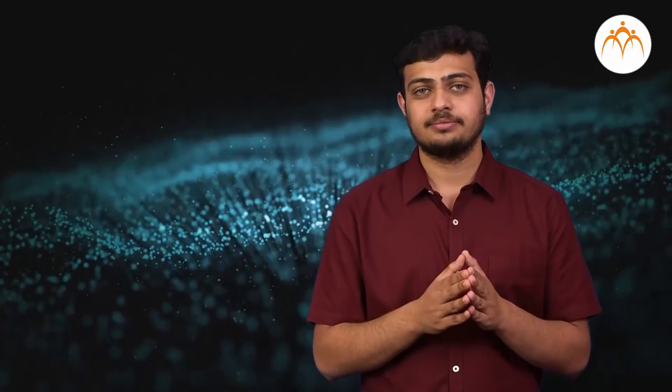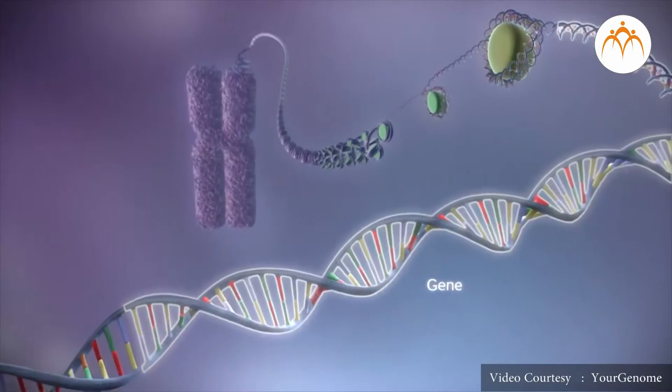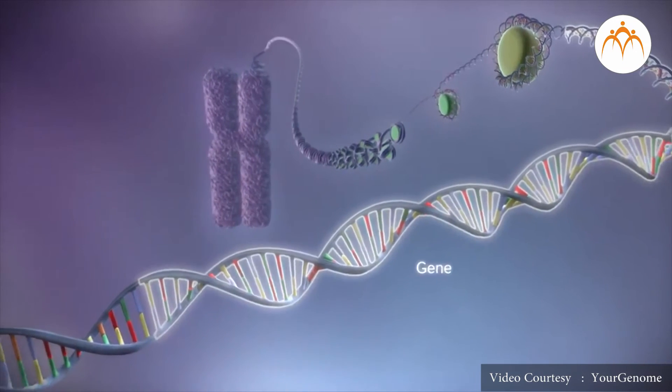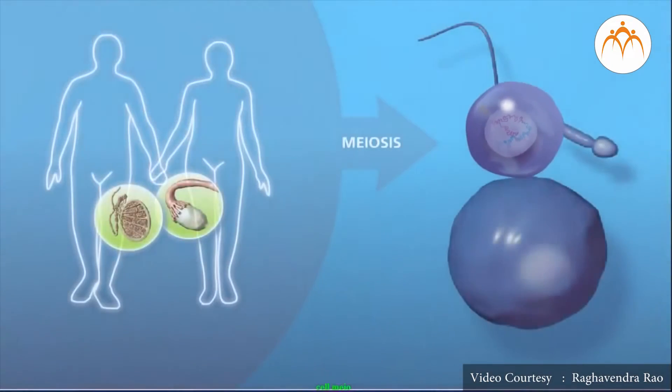Cell organelles are present within the cells and are distinct in their structures and functions. Coordination among them is very important for the normal functioning of the cell. Genes are hereditary units of an organism. It helps in the inheritance of traits from one generation to another.